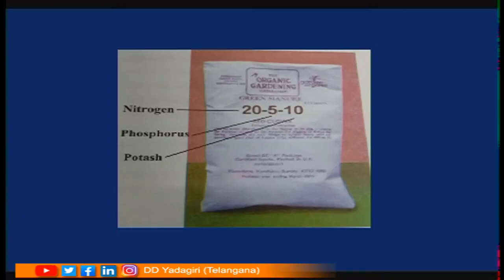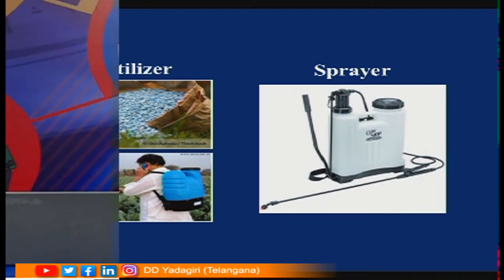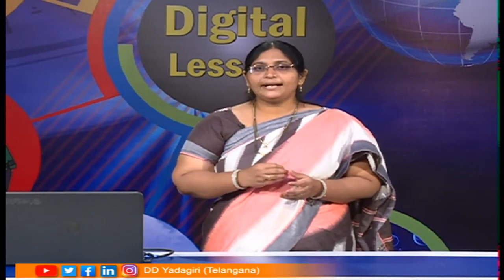See here — this fertilizer bag contains nitrogen, phosphorus, and potash. Fertilizers are sprayed using machines called sprayers. While spraying, farmers should be very cautious, because after spraying, if they directly eat food or drink water without washing hands, it may be poisonous.